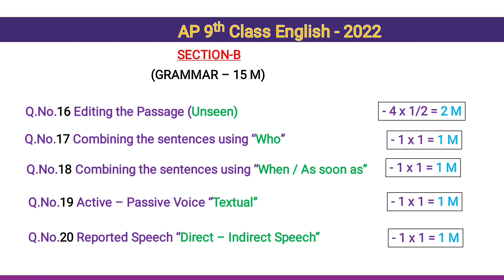Question 16: Editing the passage — this is unseen. 4 words will be underlined in the given passage which are wrong; you need to edit those with the correct answers. This is called 'editing the passage.' 4 corrections will be given for 4 into half mark, totaling 2 marks.